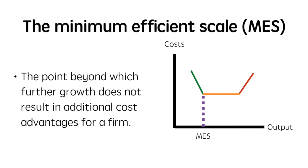Before we begin our discussion on diseconomies of scale, it's important to note this concept: the minimum efficient scale is a point beyond which further growth does not result in additional cost advantages for a firm. This means they have reached the lowest long-run average cost possible and will either continue to produce at this cost or see their costs rise. Depending on the industry, the MES can be attained at lower or higher levels of output. Car manufacturers would be an example of the MES occurring at high levels of output, while a barber shop owner can operate two to three shops without needing to hire a manager, but after this point may find himself hiring one, thus driving up average costs.